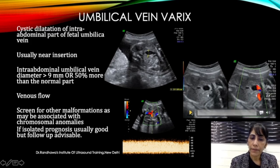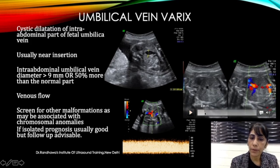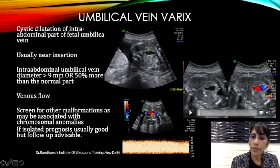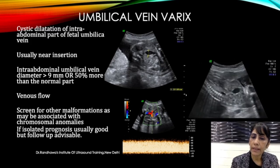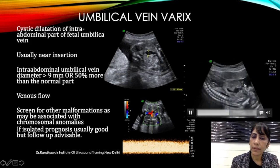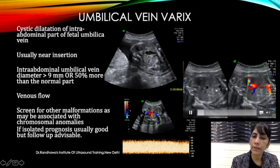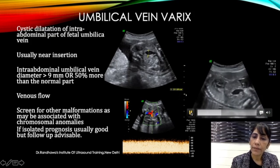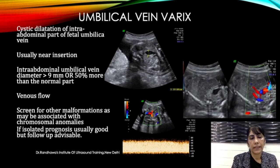Now let us look at the video. I will move slowly so you can make it out. This is the area — you can compare this dilated portion with the normal portion and by appearance alone you can tell it is much more dilated. When measured it was more than 9 mm, around 10 mm. With color applied, you can see the portal area, and in the longitudinal view the dilated umbilical vein part is clearly visible — this part is normal, this part is also normal, and this part is distended. This is an umbilical vein varix. I hope this small topic added to your knowledge.